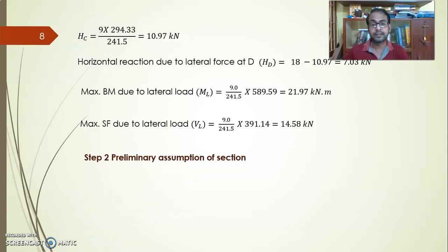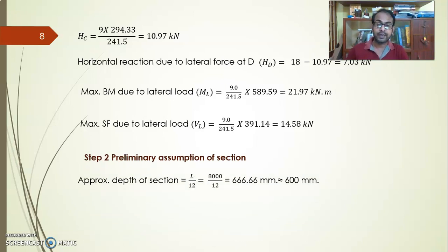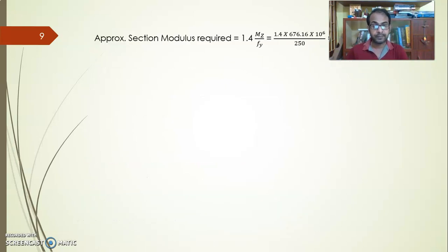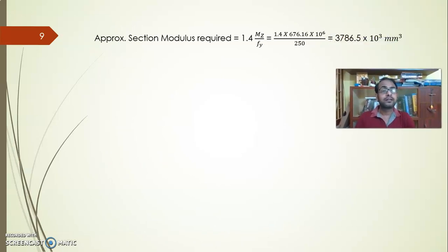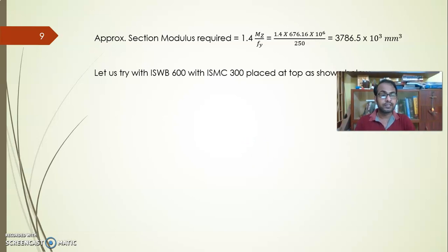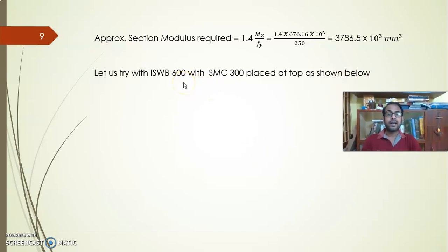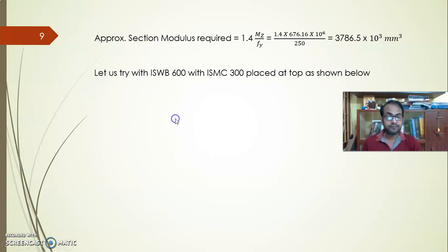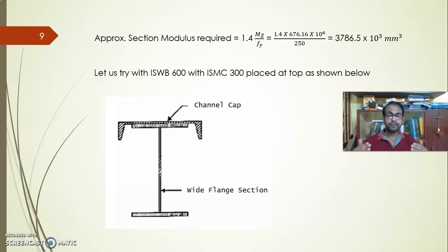For the preliminary section assumption, by thumb rule the depth is taken as L/12, approximately 600 mm, and the width as 300 mm. The approximate section modulus required is calculated. The section chosen is a composite section: ISMB 600 (wide flange beam) with an ISMC 300 channel placed on top of the flange, forming a combined section for the gantry girder.